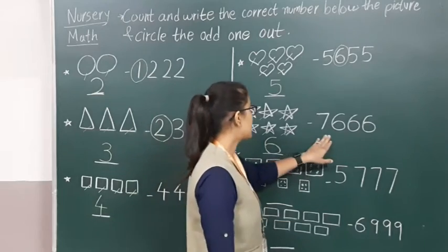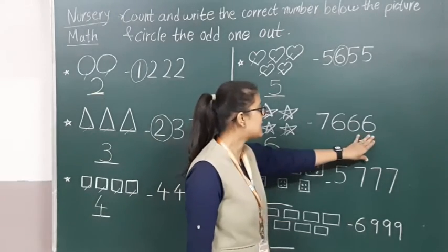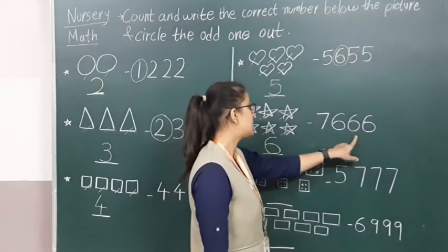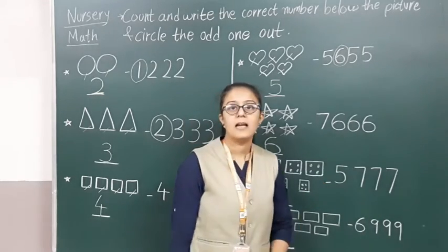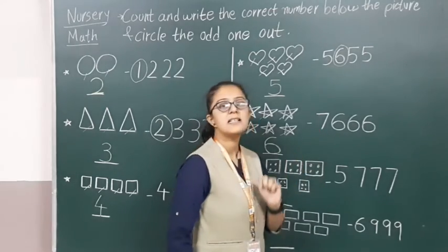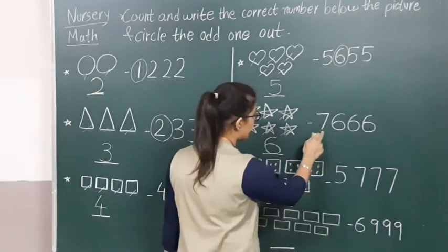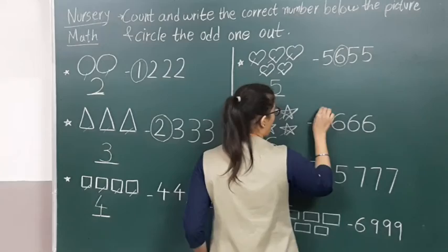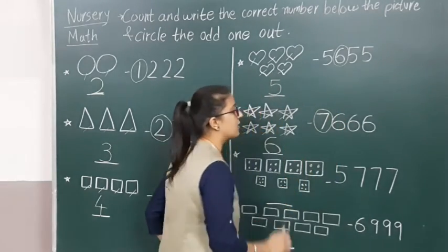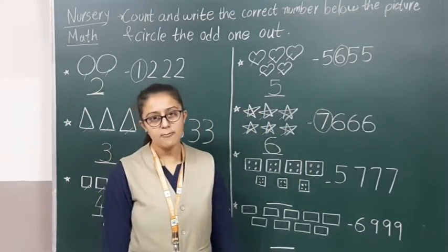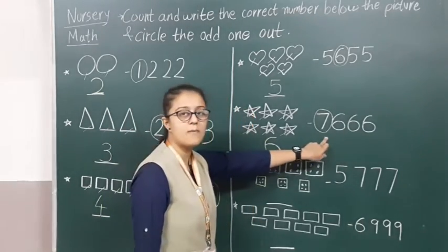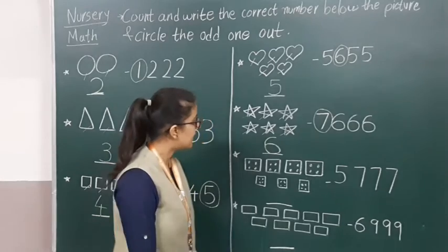Now as you can see there are six numbers, and there are three 6s — one, two, three. And there is one 7. So this number 7 is odd. We have to do circle on that number 7, because number 7 is looking different from the rest.